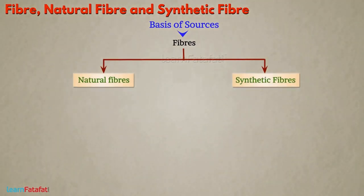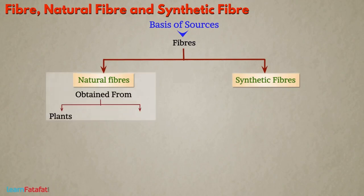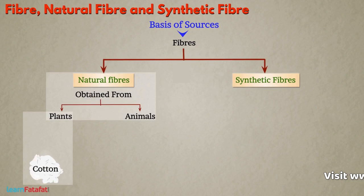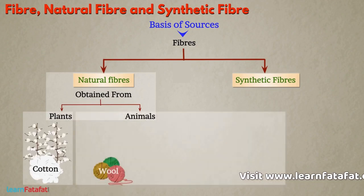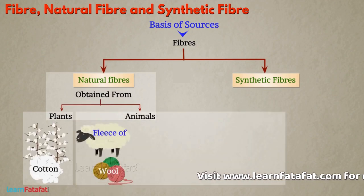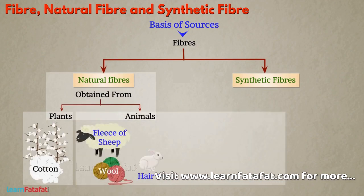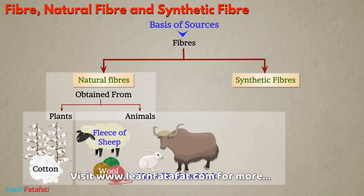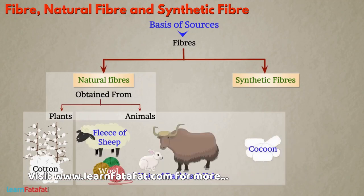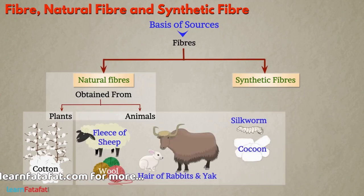Natural Fibres are obtained from plants or animals. For example, cotton is obtained from plants. Wool is obtained from the fleece of sheep, and also from the hair of rabbit and yak. The cocoon of silkworm gives us silk fibre.